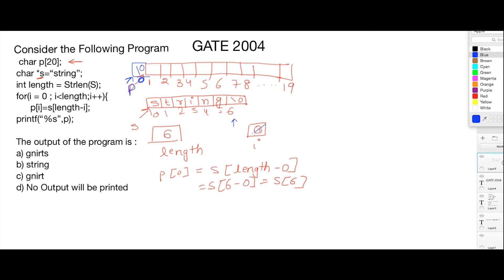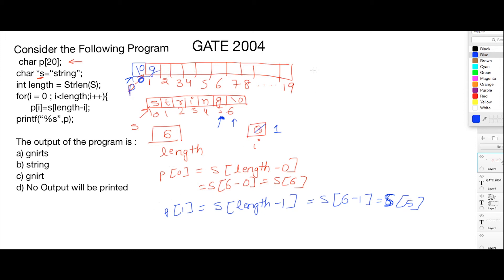Now i is incremented to 1. So p[1] is equal to s[length - 1] which is s[6 - 1] = s[5]. Whatever data is stored at index location 5 is stored at index location 1 of p, therefore 'g' is stored here. Next, i becomes 2, so p[2] = s[6 - 2] = s[4]. Whatever is stored at index 4 is stored at index 2 of p, so 'n' is stored here.